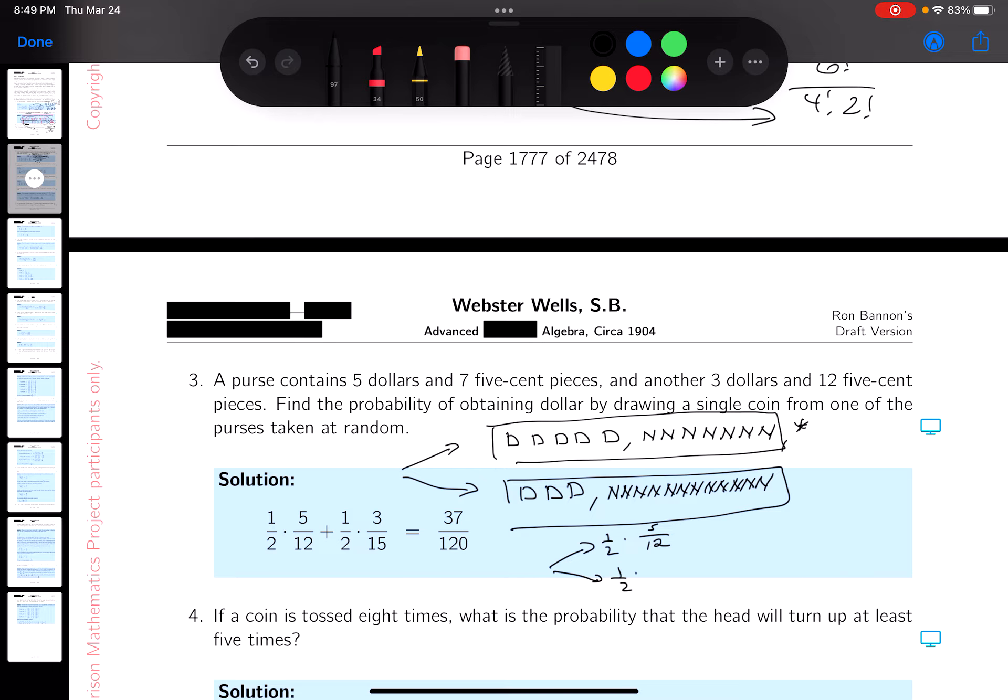Now, what's the other guy going to be? What's counted up? $3 and $12 five-cent pieces. That's $15. What's the success there? Well, there's $3 there. So it's going to be, I'll write this down for you.